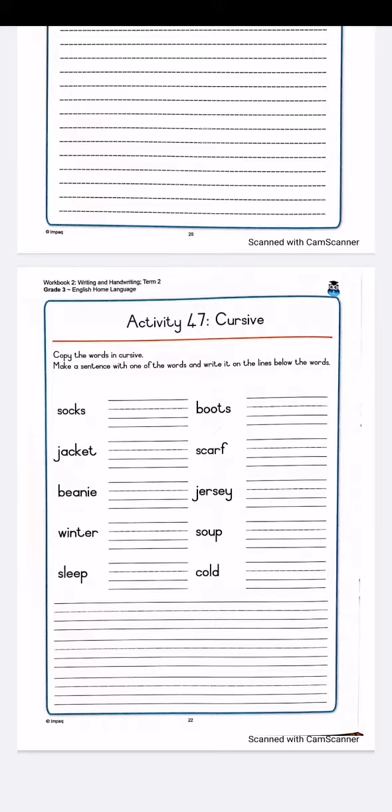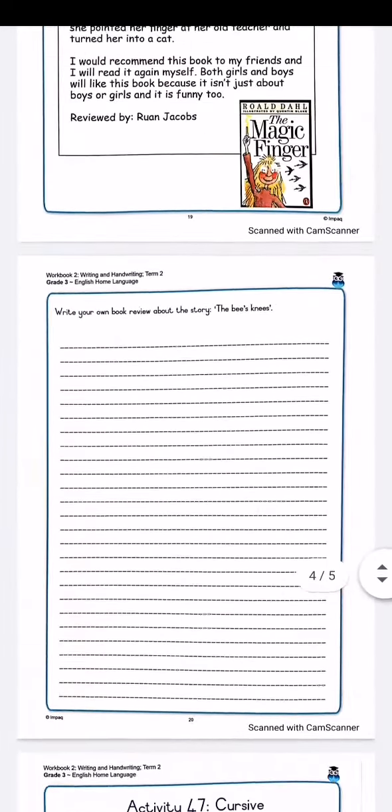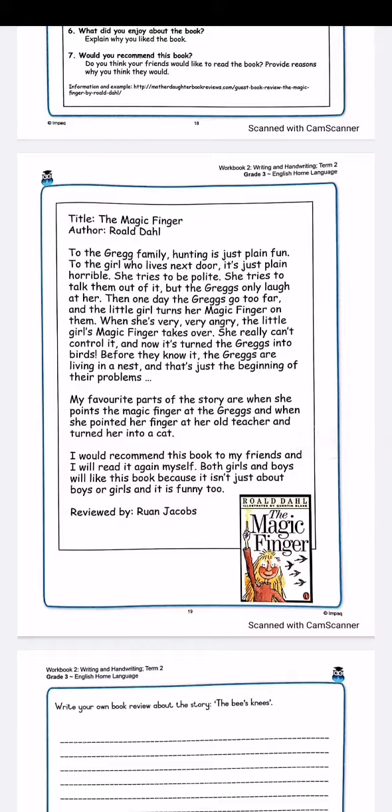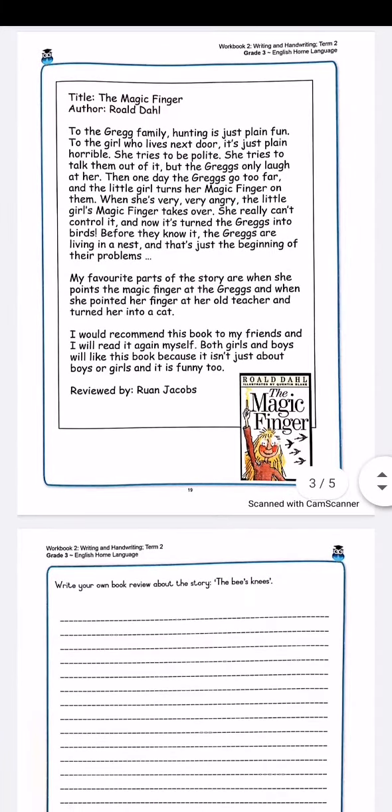Remember, a sentence starts with a capital letter and ends with a full stop. So remember that for the book review on Wednesday, you can practice writing the book review in your English writing lines book. Make any changes that you would like on there, and then Thursday or Friday you can complete it in your English workbook too, so that it's written out nice and neat.